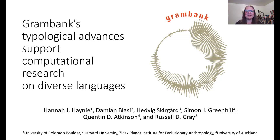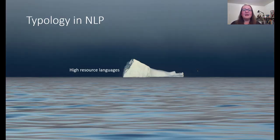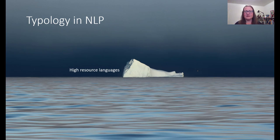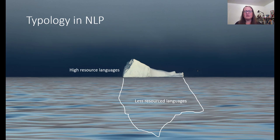I'm here to talk today about the Graham Bank Typological Resource and how its advances can help to support research in computational linguistics that covers diverse languages of the world. It's widely recognized in natural language processing and computational linguistics more generally that research attention varies across languages, with just a handful of the languages of the world receiving most of the attention and having most of the resources. The rest of the thousands of languages of the world have fewer resources to draw on, and typological information is one type of resource that can be used to extend the reach of language technologies to these less studied languages.